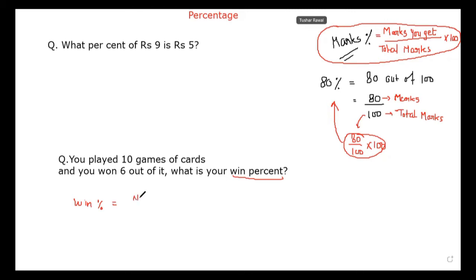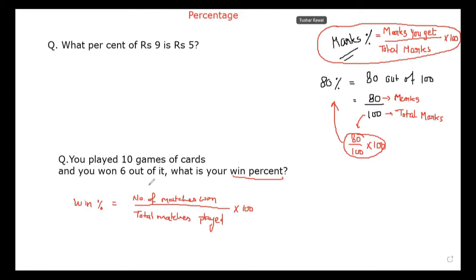Win percentage equals to number of matches won upon total matches played, into 100, isn't it? Yes sir. Let us put the values and check whether you got the correct answer or not. How many matches did you win? Six. How many matches did you play? Ten. Multiply by 100 — the zeros cancel — 6 into 10 is 60. I think it should be 60 percent, not 6 percent.